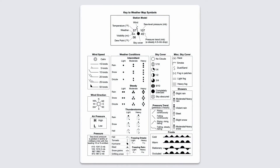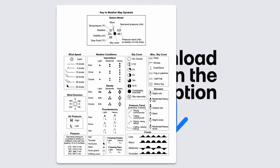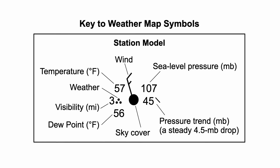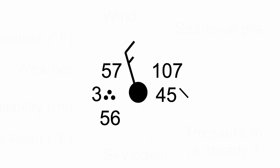Here you can see the handout I'm talking about. This is a page from the recently revised New York State Earth Science Reference Tables — you can grab your own copy for free using the link in the description below. At the top of this sheet is a fully labeled example of a weather map symbol, or a station model. The purpose of a station model is to communicate a large amount of data in a very simple, tidy little package that's easy to draw and easy to share.